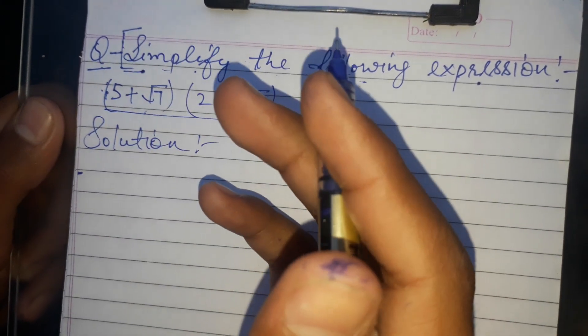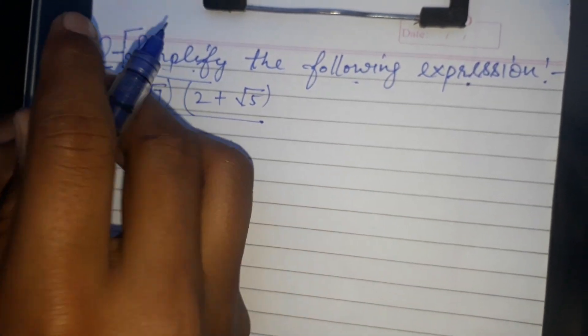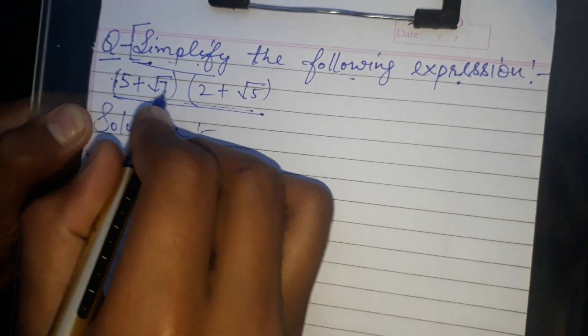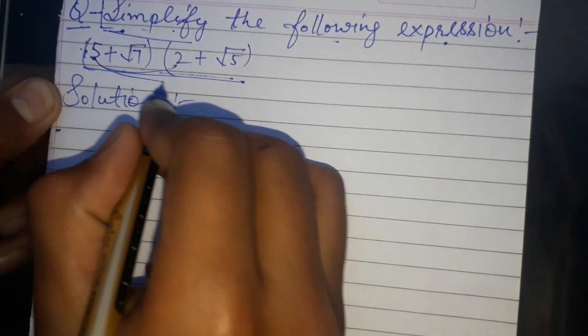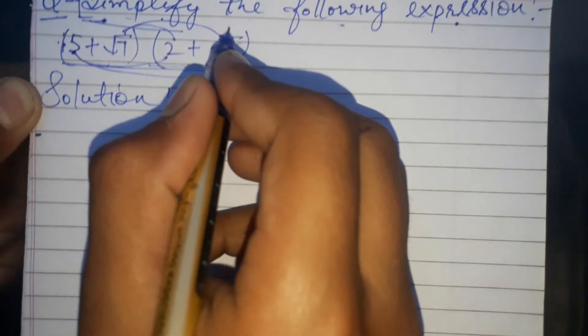We have to simplify this expression. First, we have to give this bracket 2. So first of all, 5 to this, and then this, and then root 2 to this, and then root 5 to this.